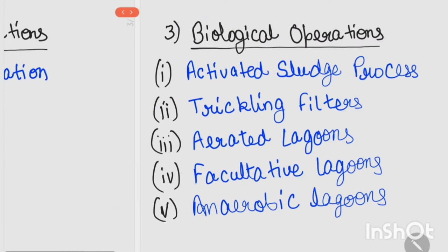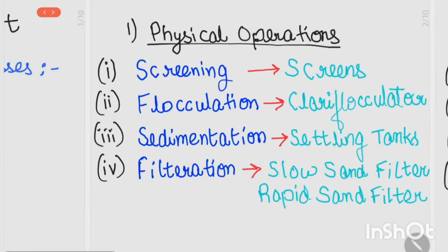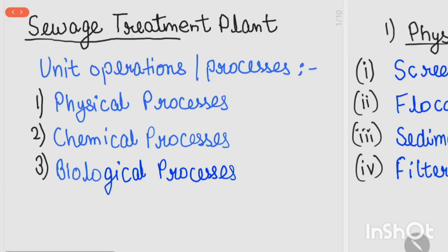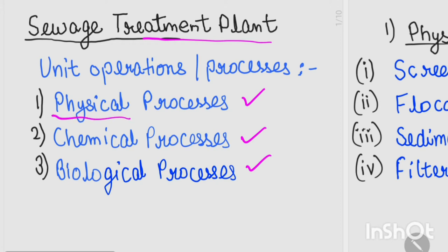In the sewage treatment plant, processes are divided into physical, chemical, and biological categories. In the physical category, mechanical machines are used for sewage treatment. In the chemical category, chemicals are used — for example, chlorination is the simplest example of a chemical process.